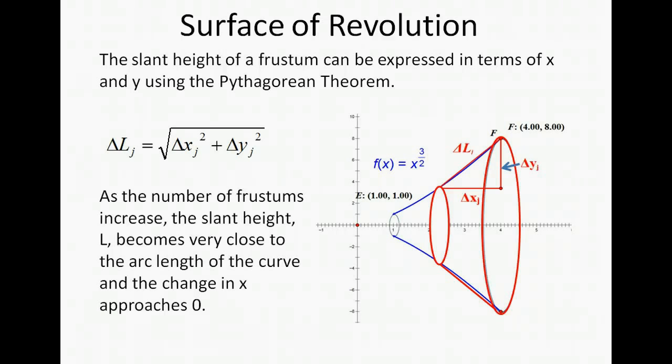So our Δx² plus our Δy² is going to give us the change in the slant height or the length of each individual frustum's slant height. As the number of the frustums increase the slant height becomes very close to the arc length of the curve and the change in x is going to approach zero.